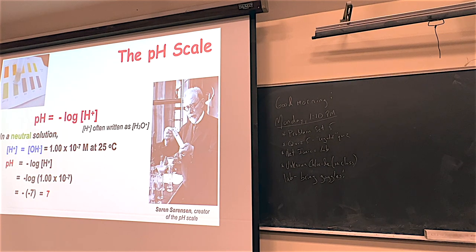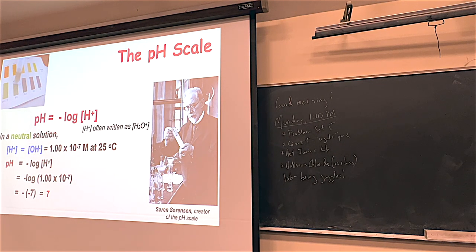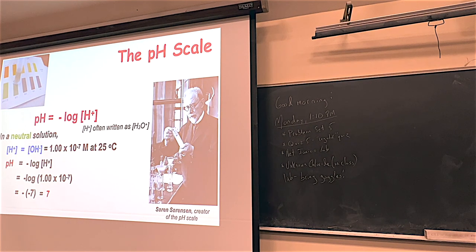There are two types of logarithms possibly in your calculator. You want to make sure that you're using what's called the base 10 log, which is LOG. You might have LN, which is a natural log, on your calculator. Make sure you use the base 10 log here - that's what all pH calculations use.